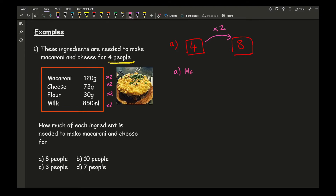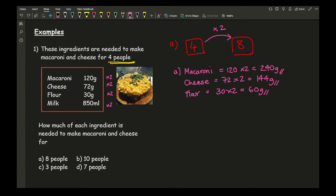So for macaroni: 120 times 2 is 240 grams. Cheese: 72 times 2 gives 144 grams. Flour: 30 times 2 is 60 grams. And finally milk: 850 times 2 gives 1,700 millilitres. Try not to forget the units.